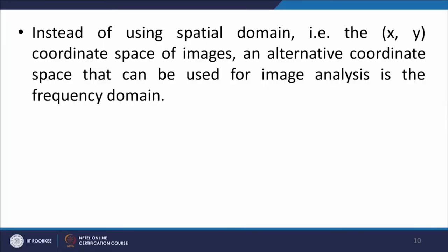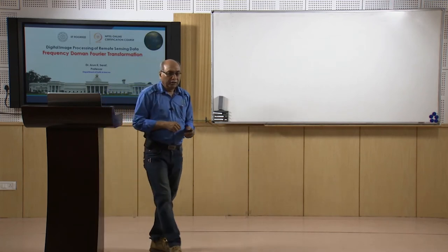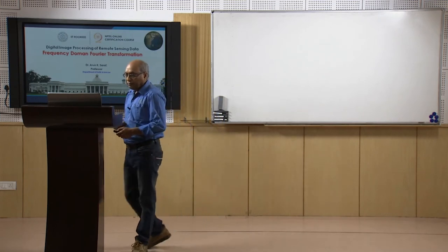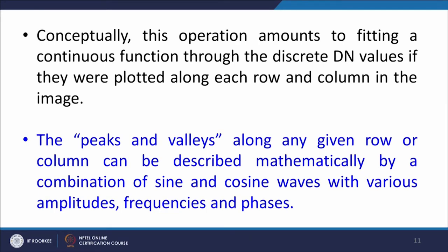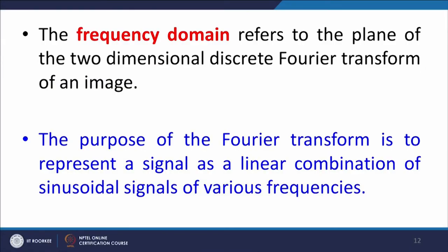Instead of using the spatial domain — that is, the x and y coordinate space of an image — an alternate coordinate system that can be used for image analysis is the frequency domain. In this approach, an image is separated into various spatial frequency components through the application of the mathematical operation known as the Fourier transform. Conceptually, this operation amounts to fitting a continuous function through the discrete digital number values plotted along each row and column in the image. The peaks and valleys along any given row or column can be described mathematically by a combination of sine and cosine waves with various amplitudes, frequencies, and phases.